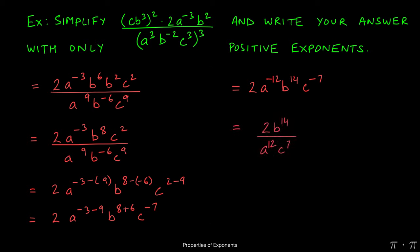which allows us to change or flip the signs on the exponents. So a to the negative 12 becomes a to the 12 in the denominator, and c to the negative seven becomes c to the positive seven in the denominator as well.